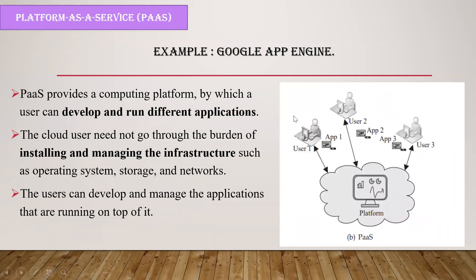Next is platform as a service, or PaaS. We have taken Google App Engine as an example. PaaS is available in the cloud and it can develop and run different applications. Just as SaaS provides software resources, PaaS provides a platform to develop and run an application. You don't need to purchase and install something — with PaaS, you can run and develop an application in the cloud, and users can develop and manage all applications on that platform.